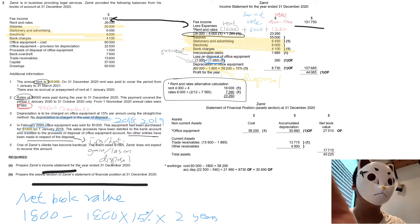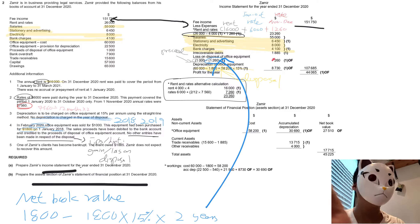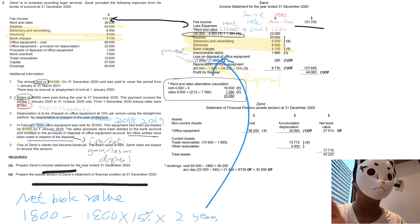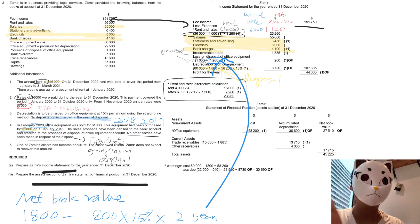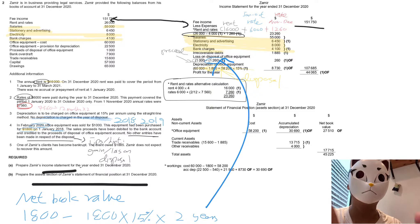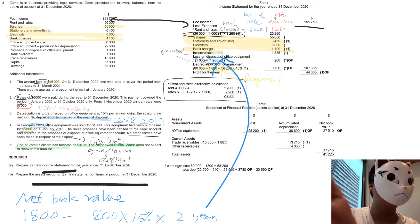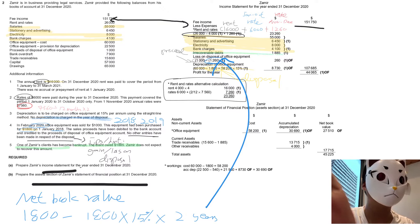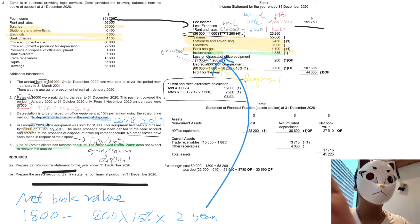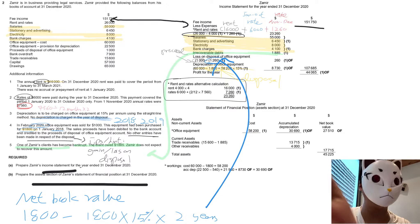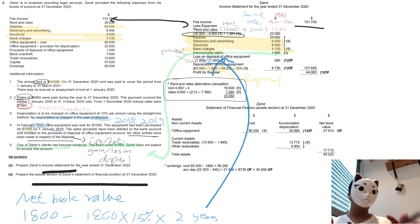One more item: there is a bad debt that needs to be written off. So write off the bad debt and put it here. That's all — and then you can calculate the profit for the year. That's how we do Question 2a.